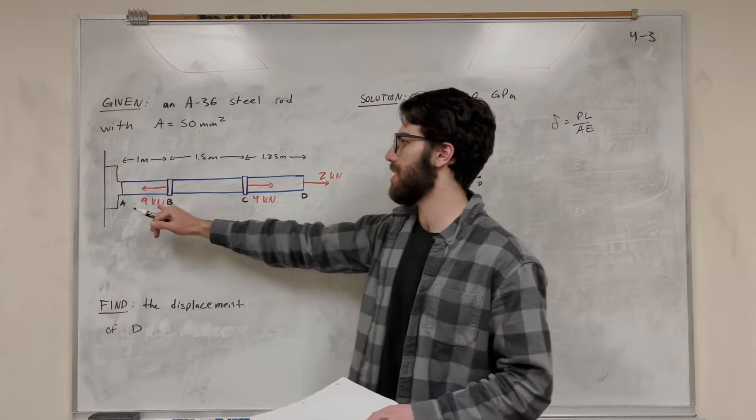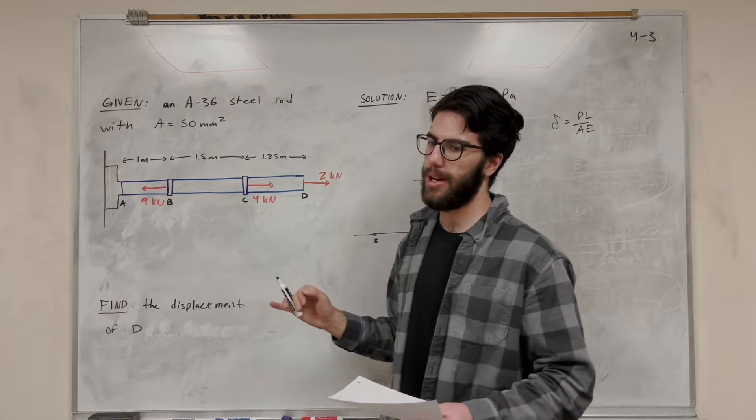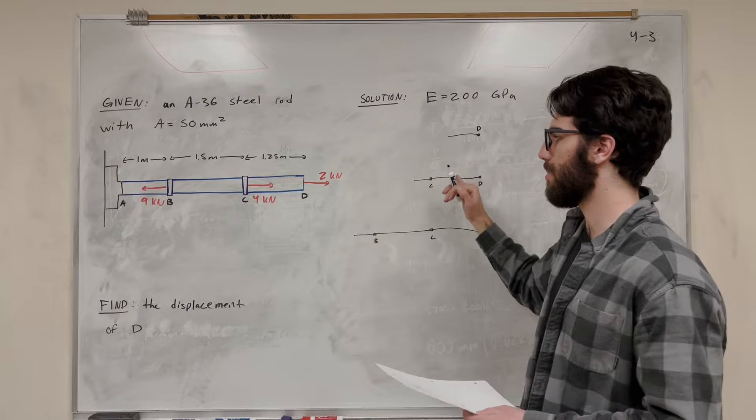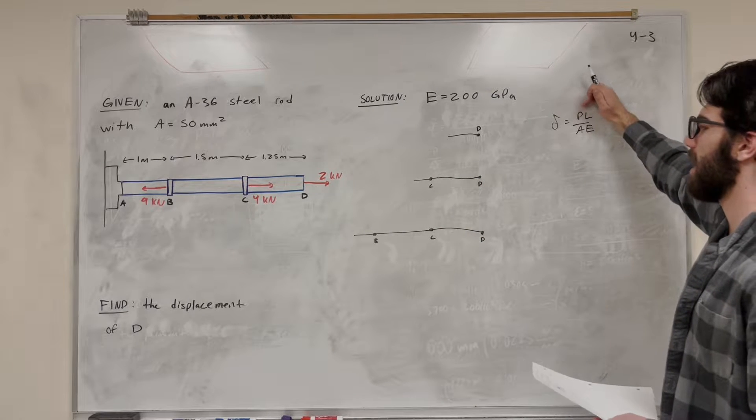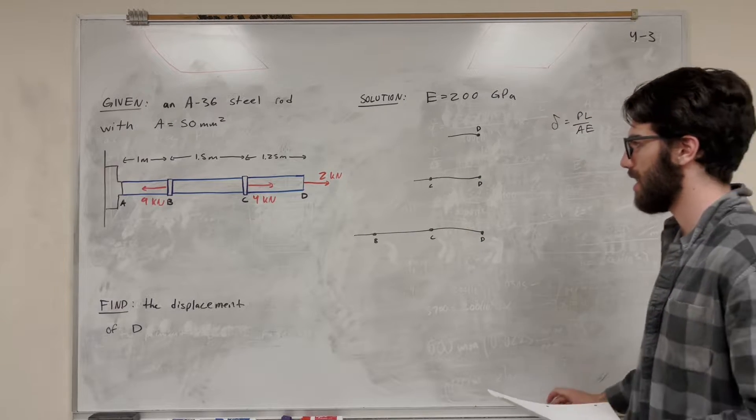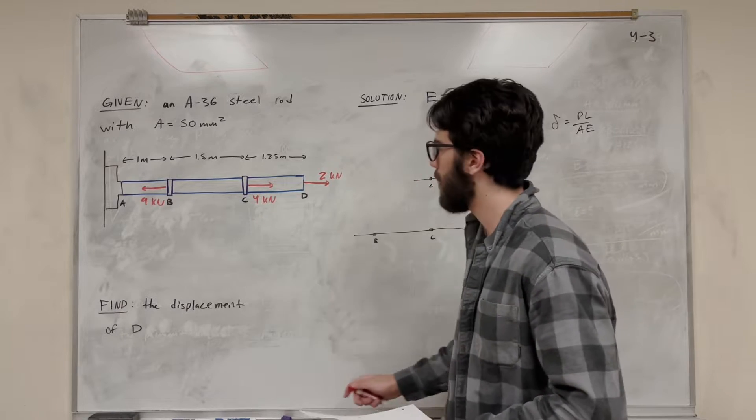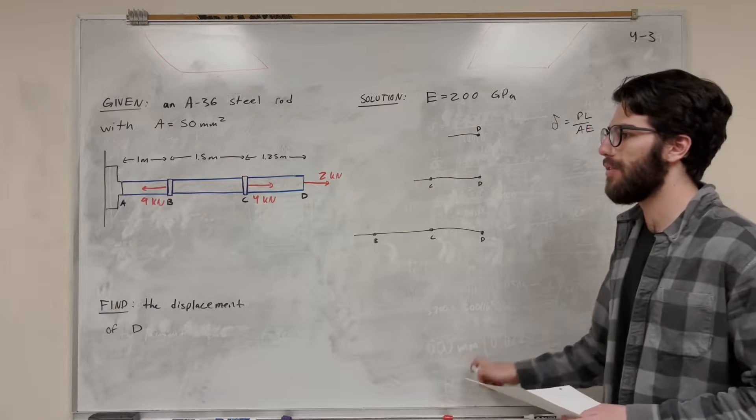But the problem is we have these three different sections, and there's forces acting at each one of them. So we need to go through section by section and find out what normal force is acting in that area and how much length there is in that area. So that's what I did. I went through these three free body diagrams, but I haven't finished them yet.